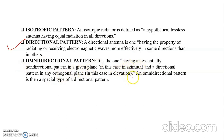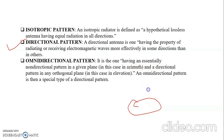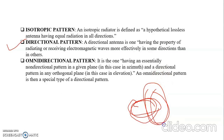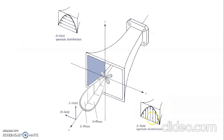An omnidirectional pattern is one which has an essentially non-directional pattern in a given plane. In a further lecture, the difference between azimuthal and elevation planes will be explained. An omnidirectional antenna has no preferred direction in a given plane — if we consider the azimuthal plane it has no direction there, but has a directional pattern in the orthogonal plane, i.e., the elevation plane. So an omnidirectional pattern is also a type of directional pattern.